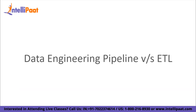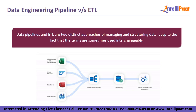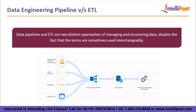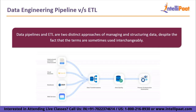Now we come to our main agenda which is data engineering pipeline versus ETL. Data pipelines and ETL are two distinct approaches of managing and structuring data, despite the fact that the terms are sometimes used interchangeably. Data extraction, transformation and loading are performed during ETL processes. As opposed to this, data pipelines include all of the operations that are applied to data as it is transferred between systems. Data pipelines can require transformations at times but they also might not. While both procedures are essential for transferring data from numerous sources to a single destination, data pipelines frequently operate in real time while ETL pipelines run in batches.